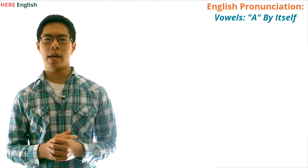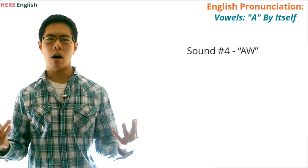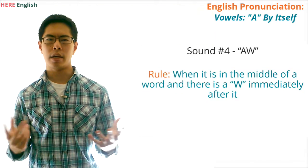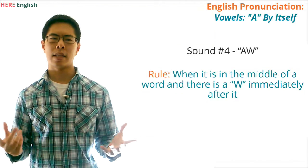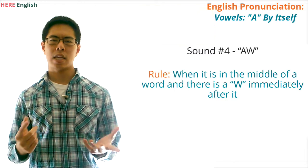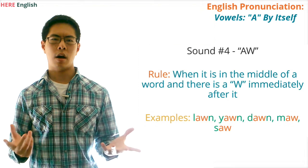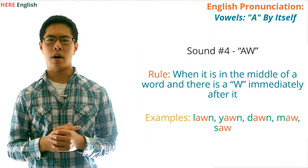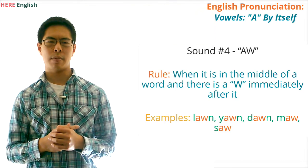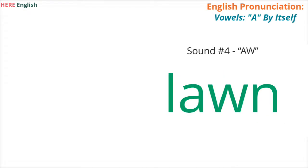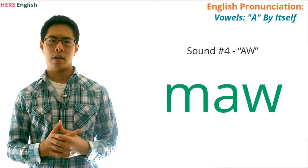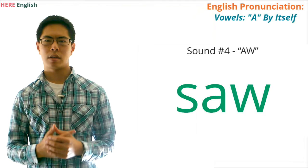Finally, the fourth main sound that the vowel A can have in a word is AW. There is one major rule for when the letter A will sound like AW: the vowel A will sound like AW when it is in the middle of a word and there is a W immediately after it. Examples of words with this rule are lawn, yawn, dawn, maw, and saw. Practice saying: lawn, yawn, maw, saw.